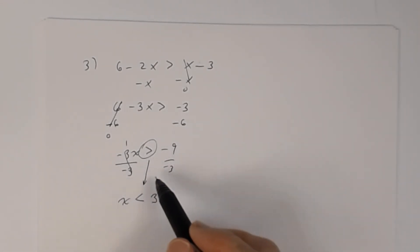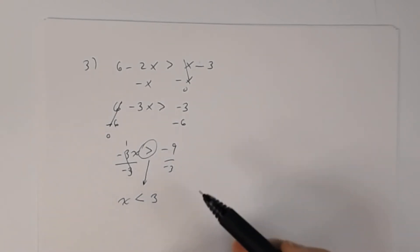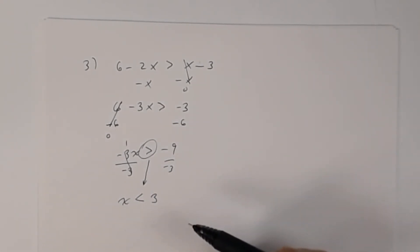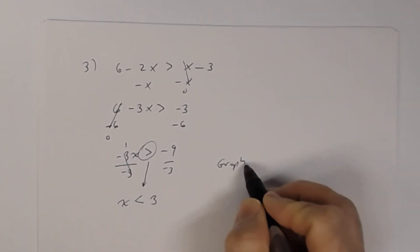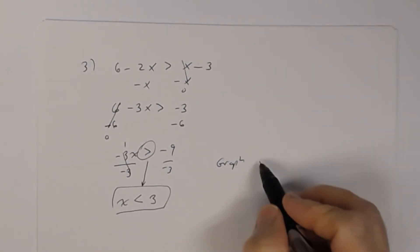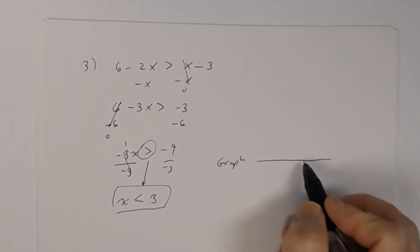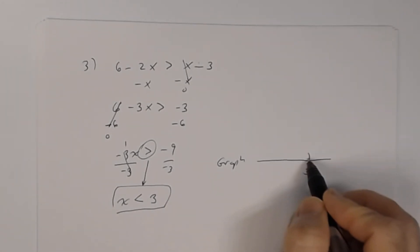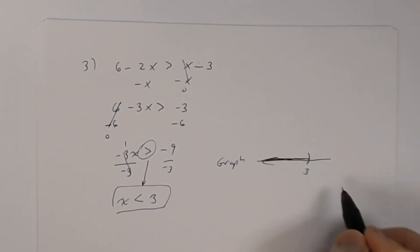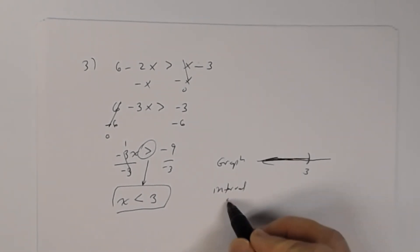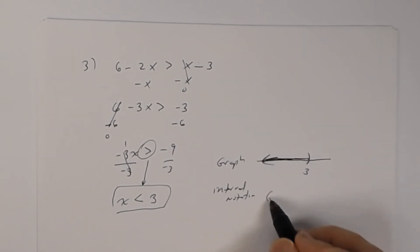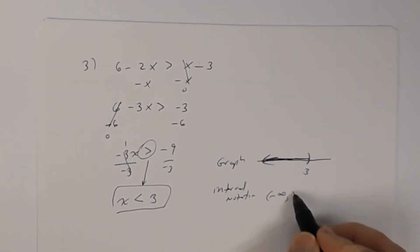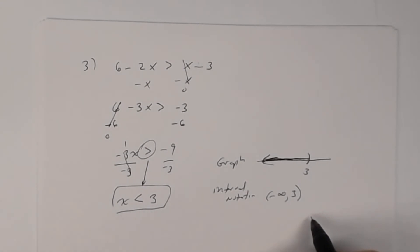Be careful: if you did not reverse the inequality sign when dividing by negative 3, you'd state the wrong solutions. The graph has 3 on the number line with no equal sign, so use parentheses pointing to the left, shading everything less than 3. The interval notation is (-∞, 3).